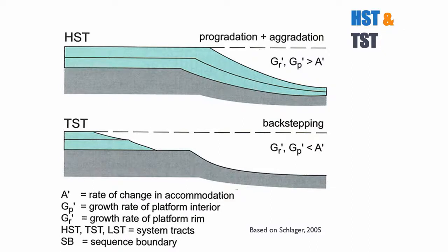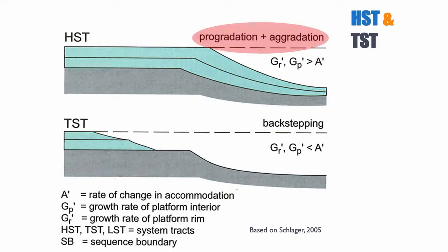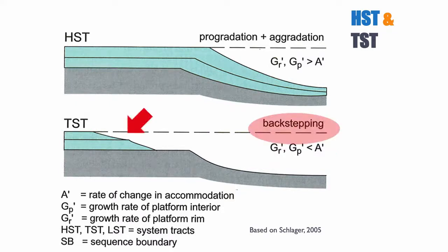Looking at the different system tracts: during the HST, the rate of production on the rim (Gr) and on the platform far exceeds the rate of accommodation change, so you typically see progradation and aggradation on carbonate systems. During the TST, the transgressive system tract, we see the reverse — the rate of production on the rim and platform is less than accommodation change, so we see backstepping and retrogradation of the system.